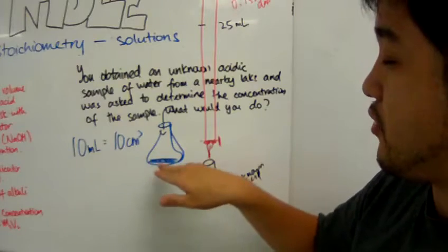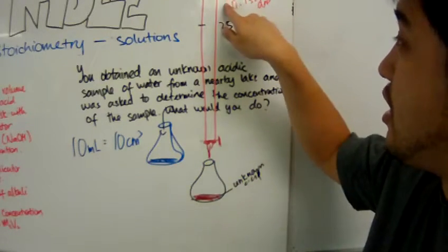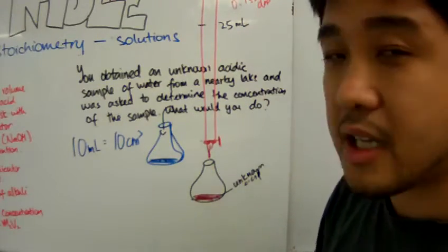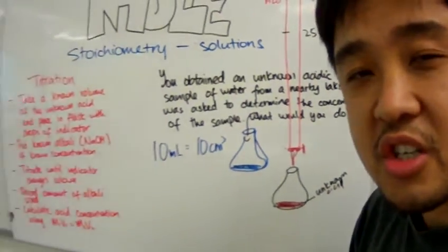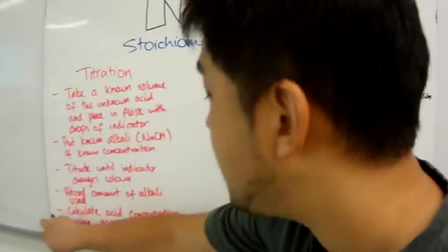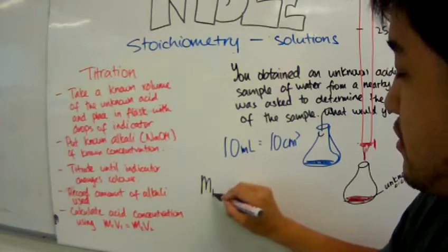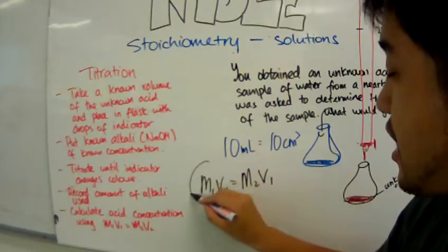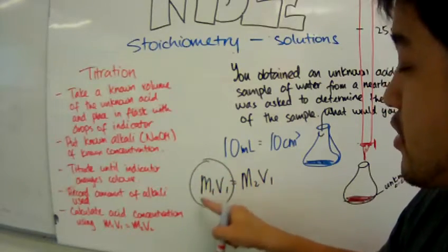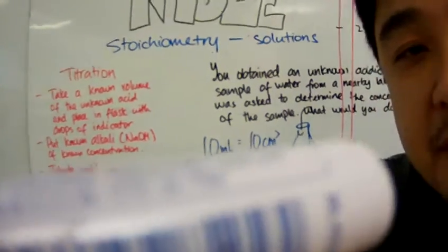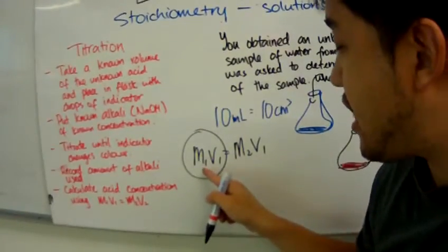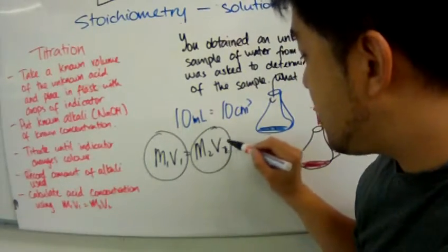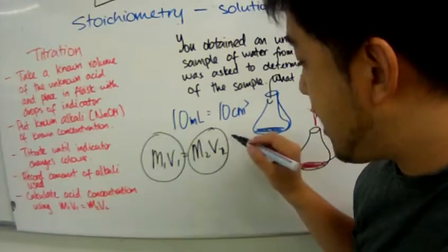then I can now, with the information of the volume of acid, the concentration of the alkali, and the volume of alkali used, I can now calculate the concentration of the acid by using the same formula of M1V1 equals M2V2. And in this case, M1V1 is the concentration and volume of acid. And M2V2 is the concentration and volume of the alkali.